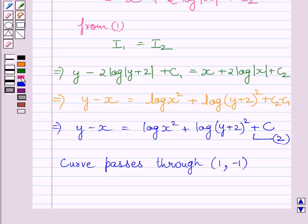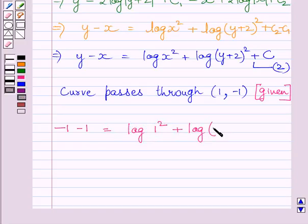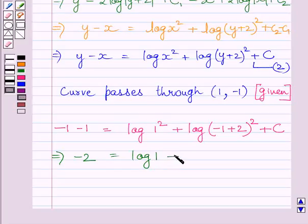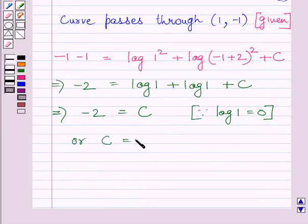Now we know the given curve passes through the point (1, -1). So we substitute x equals 1 and y equals -1 into equation 2, giving -1 minus 1 equals log(1²) plus log(-1+2)² plus c. This implies -2 equals log(1) plus log(1) plus c. Since log(1) equals 0, we get -2 equals c, or c equals -2.